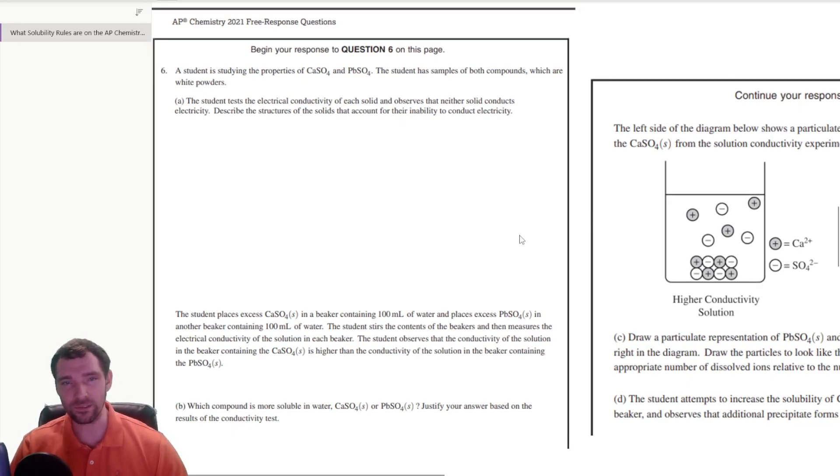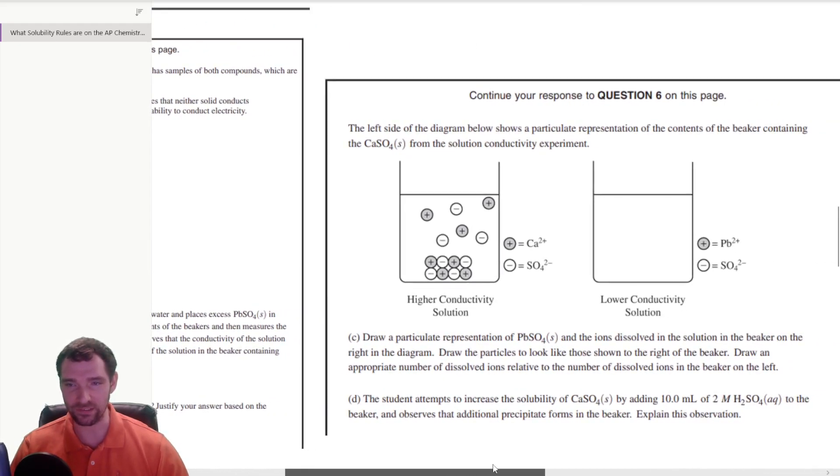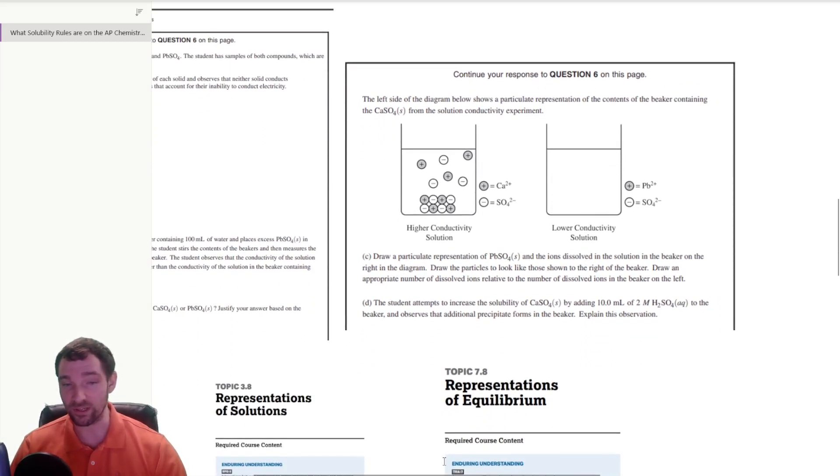This problem is a really good example of how they use precipitation on the test. You've got two different things that are dissolving. There's some precipitant and some stuff that's dissolved into the solution, some ions in the solution. You can draw in to show the relative solubility.